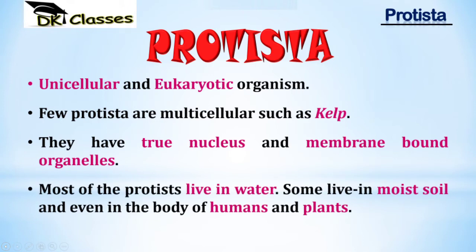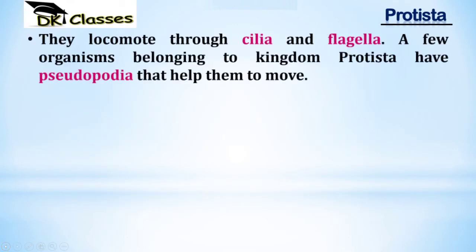Most Protista live in water and some live in moist soil, and even on the surface of human bodies and plants. They locomote through cilia and flagella. A few organisms belonging to kingdom Protista also have pseudopodia that help them to move.